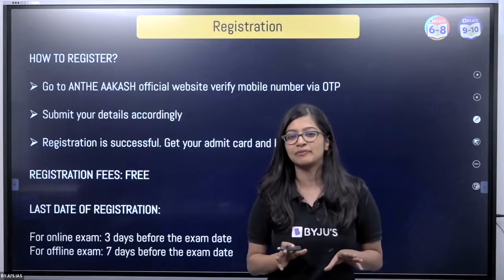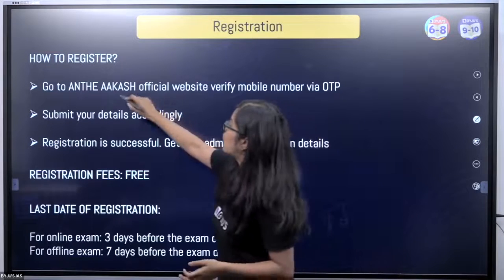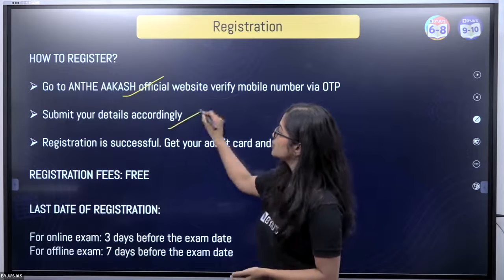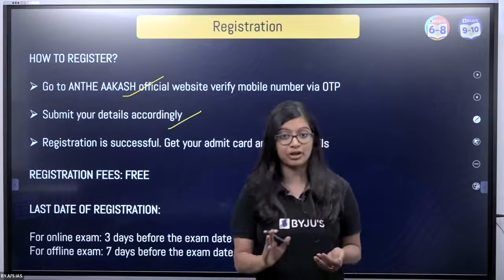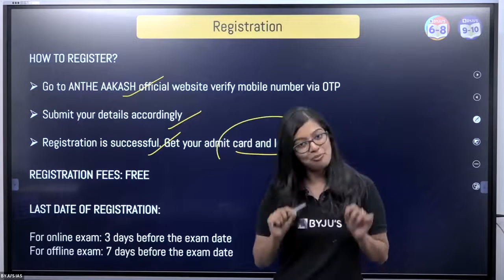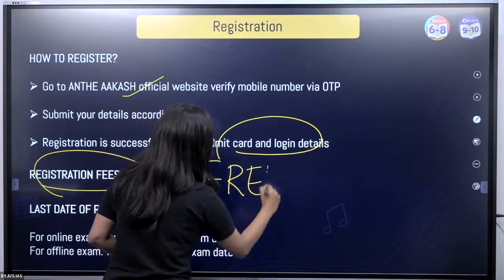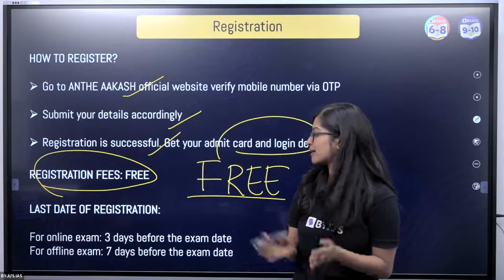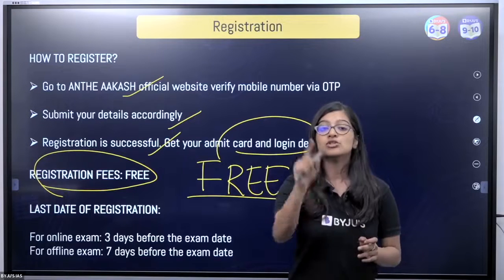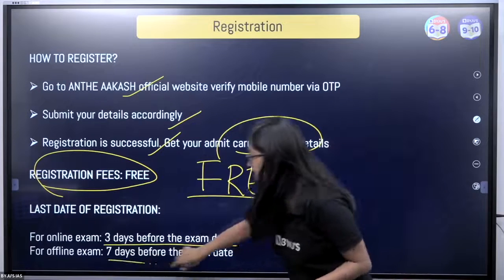Now the most important part — how do we register for this exam? Very easy. All you need to do is go to the website; the link will be available in the description box of this video. Click on the link, submit your details accurately, and once registration is successful, you will get your admit card and login details. Importantly, registration for this is absolutely free — you do not need to pay anything. The last date will be updated on the website, so keep checking. For the online exam, registration closes three days before the exam date, and for offline, seven days before.